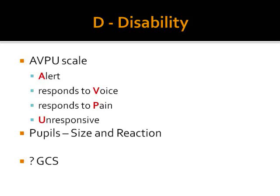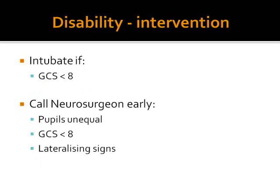The Glasgow Coma Scale can be done if we have time. We usually intubate the patient if they have a Glasgow Coma Scale of less than 8, which is the clinical definition of coma. We call a neurosurgeon early if the Glasgow Coma Scale is less than 8, the pupils are unequal, or the patient has any other lateralizing signs, for example hemiplegia or monoplegia.